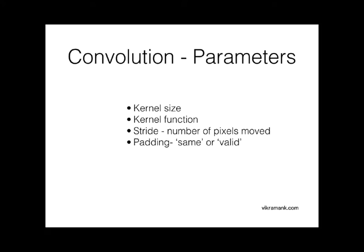Now, let's see the parameters involved in a convolutional operation. The very first thing is the size of the kernel, the kernel function, the stride which is the number of pixels which will be moving and the padding.